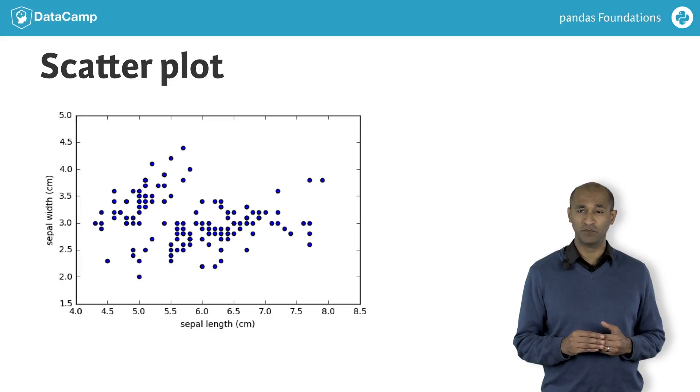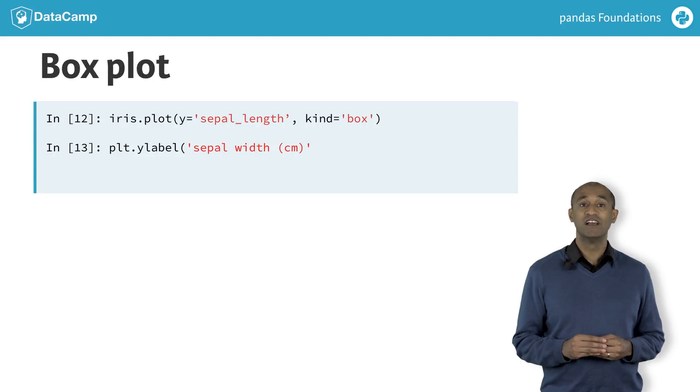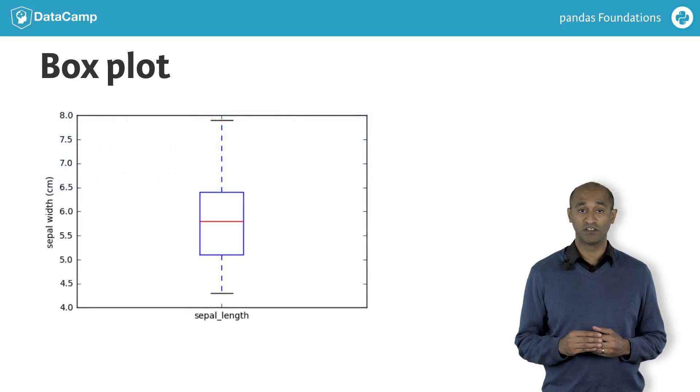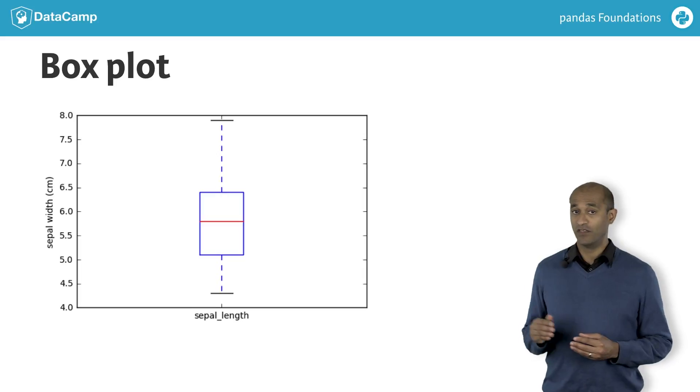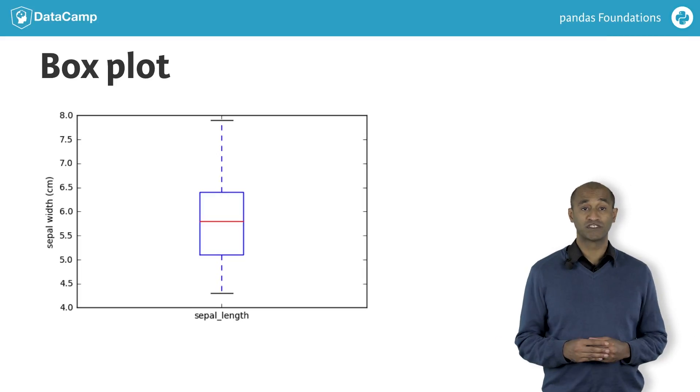Individual variable distributions are likely more informative than plotting two variables against each other. For instance, specifying kind equals box for the sepal length makes a box plot. The resulting box plot shows the range, the minimum and maximum values with the whiskers, the interquartile range with the box edges, and the median inside. We'll define these terms clearly later.